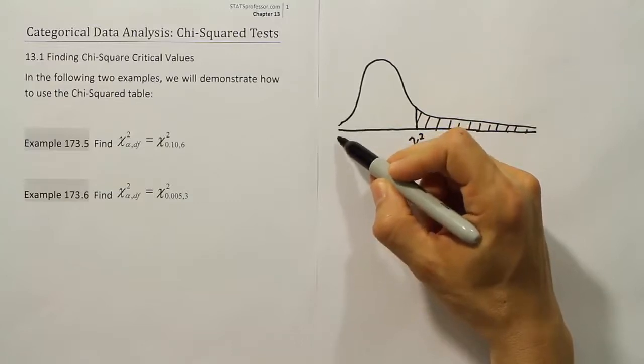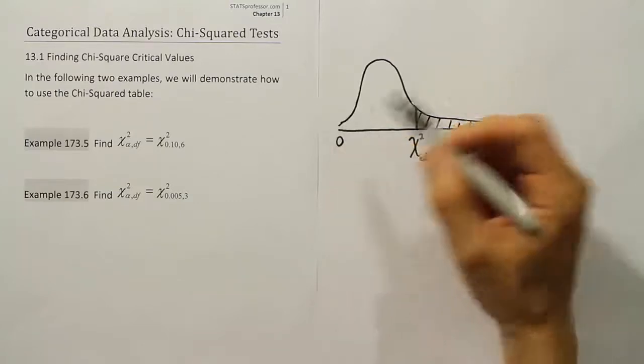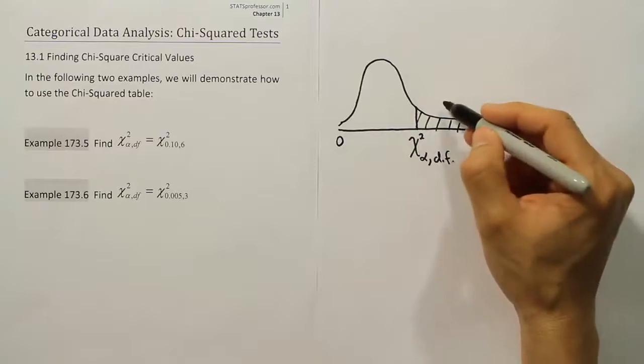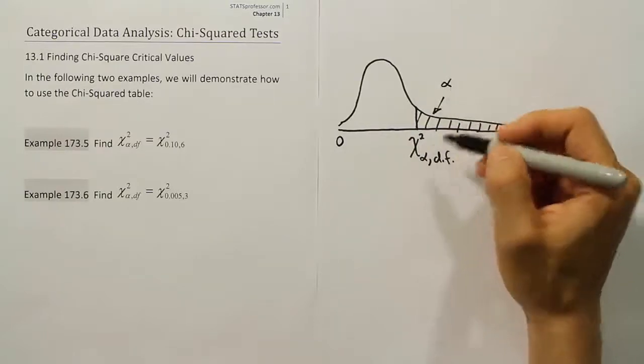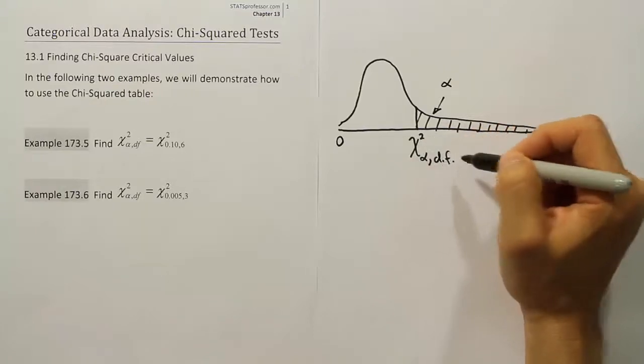Since the value is squared, this starting point will be at zero. It can't be negative because it's a square quantity. And the area in this tail is going to be referred to as alpha. So that's why we have chi-squared alpha, degrees of freedom.